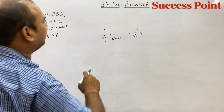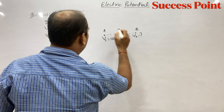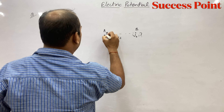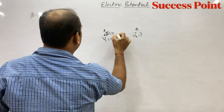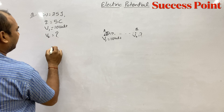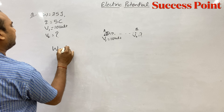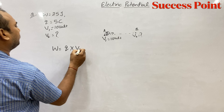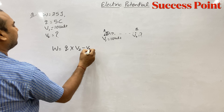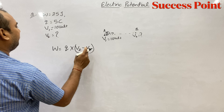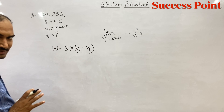Aapko pata hai ki jaise ek point se dusre point tak kisi charge ko le jao ge, Q charge ko le jao ge. To le jaane mein jo work karna padta hai, woh hota hai Q into change in potential. And change in potential nikalne ka tarika hota hai: final potential minus initial potential.